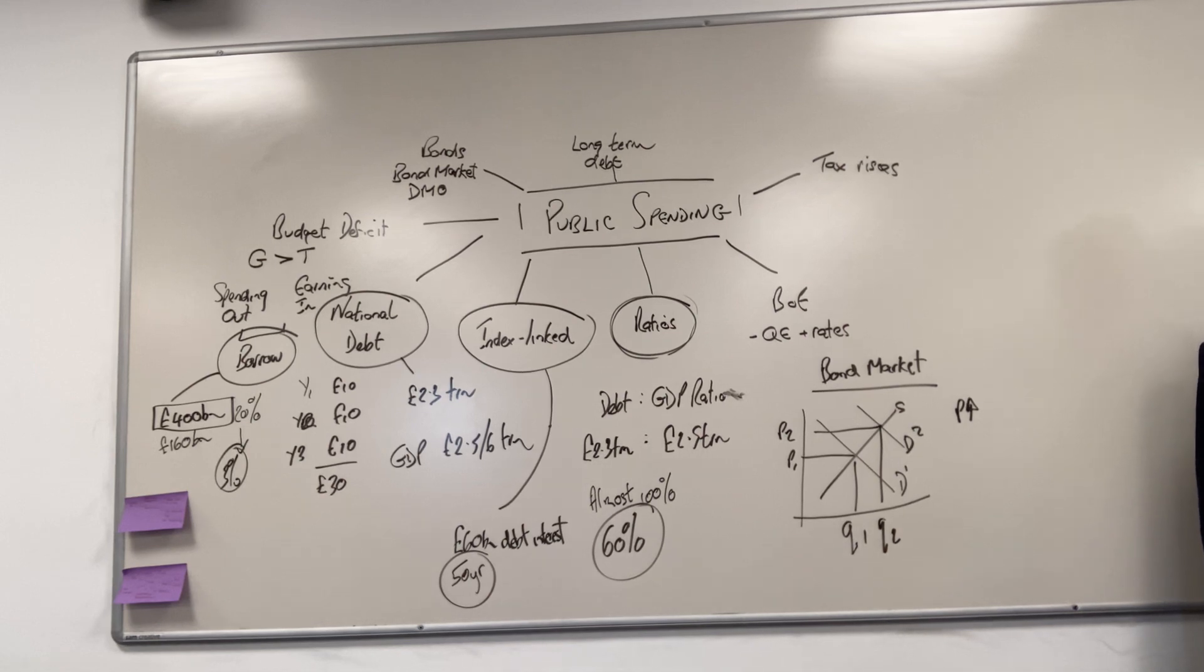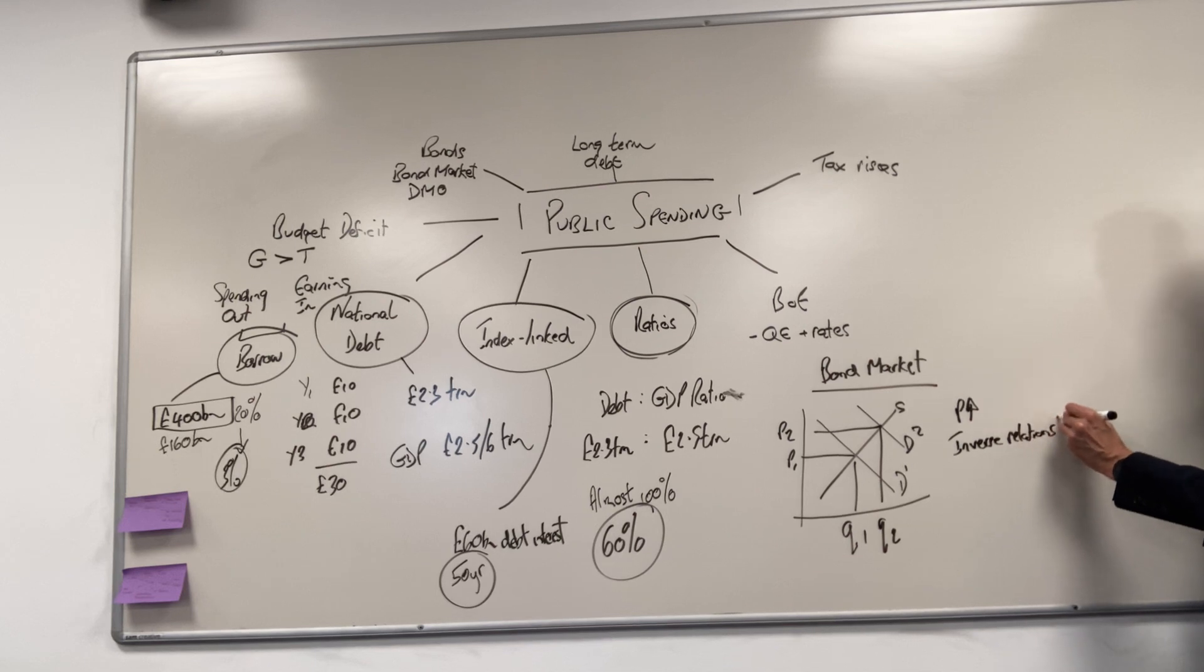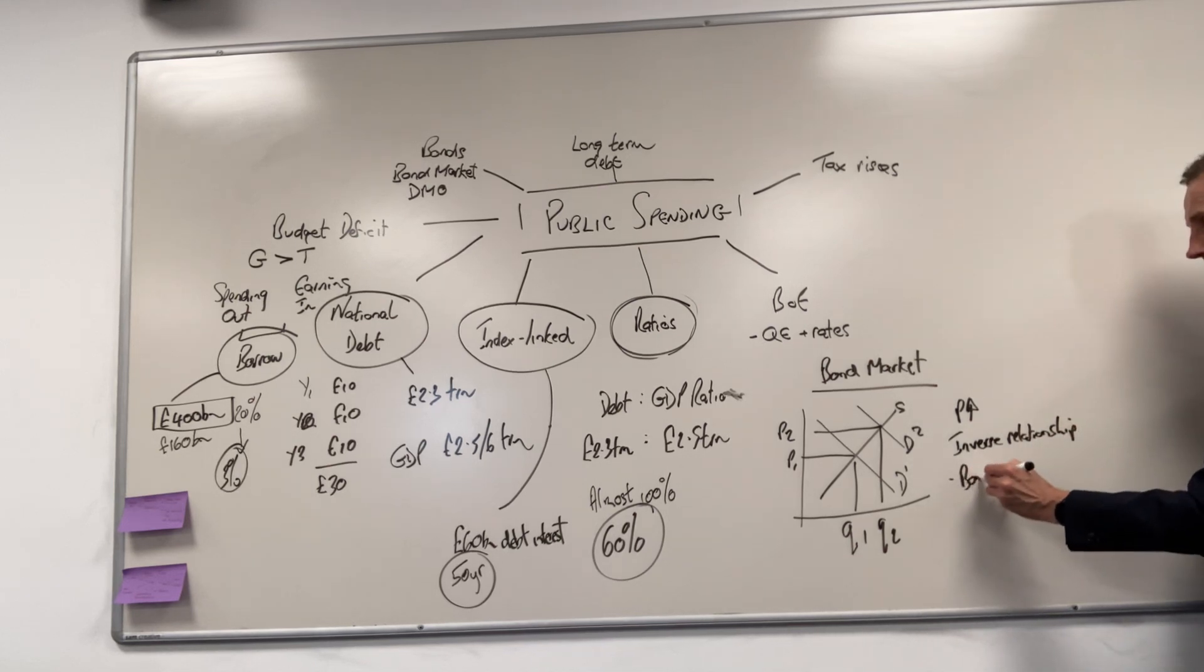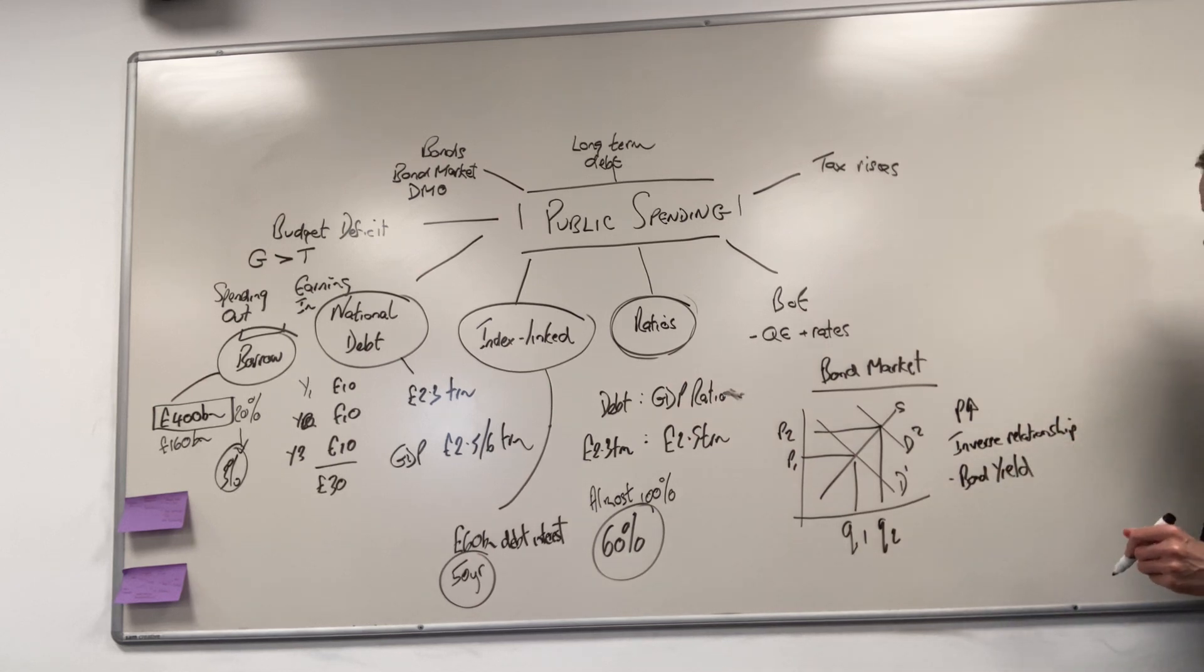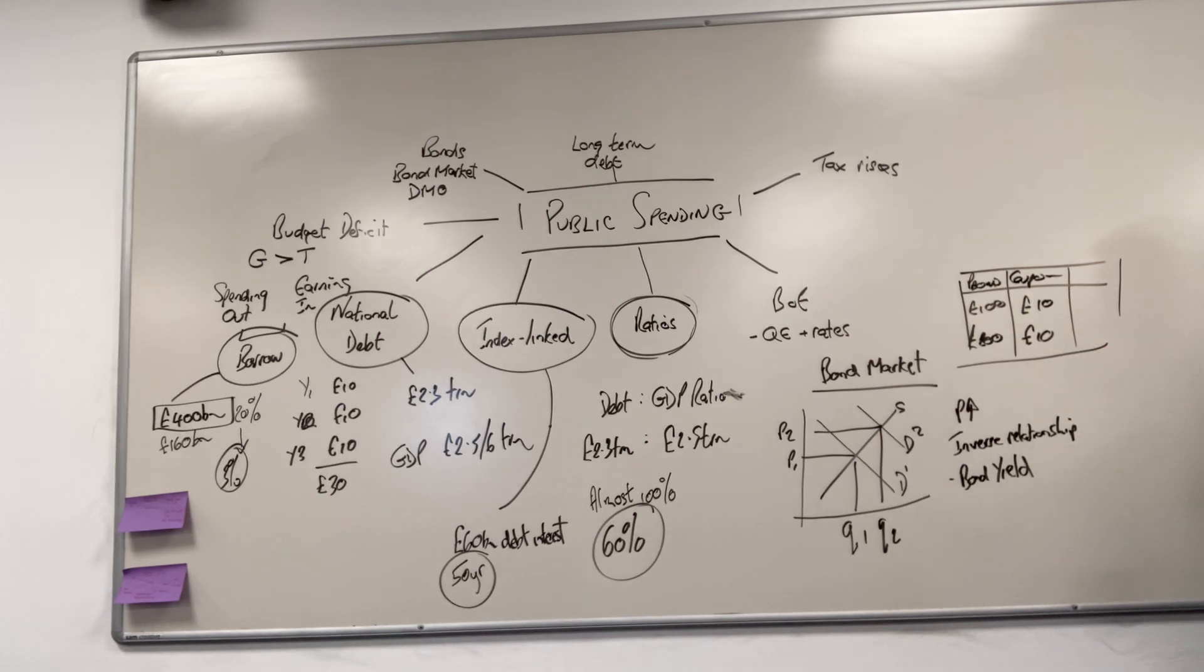Correct, there's that inverse relationship between the bond yield and the price of the bond. If you've got the price of a bond at 100 pounds or 200 pounds, and your coupon payment on it says 10 and 10, the coupon's the same but what is changing is the yield or the interest rate. 10 as a percentage of 100 is 10 percent, 10 as a percentage of 200 is 5 percent. So as the price of the bond is going up, the yield is falling.